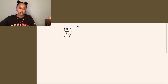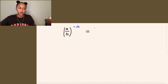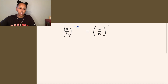Earlier we looked at whole number bases. Now we're looking at a fraction as a base with a negative exponent. If you're given a fraction to the power of a negative exponent, all you have to do is flip the numerator and denominator — so a over b to the power of negative n becomes b over a to the power of your positive exponent.